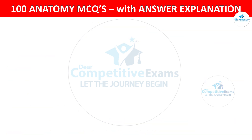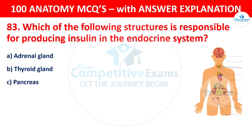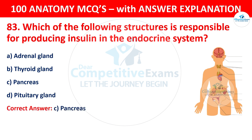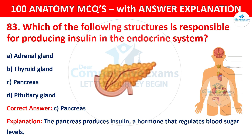Question number 83: Which of the following structures is responsible for producing insulin in the endocrine system? The options are: Adrenal gland, Thyroid gland, Pancreas, or Pituitary gland. The correct answer is C — pancreas. The pancreas produces insulin, a hormone that regulates blood sugar levels.